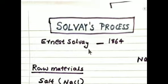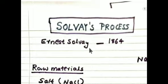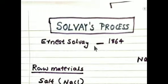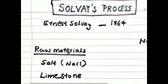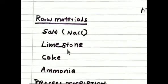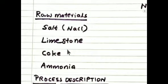The Solvay process is a widely used method for the production of sodium carbonate. It is a more economic and less polluting method than the Leblanc method, which was the old method for producing sodium carbonate. Let us now discuss the raw materials of this process.